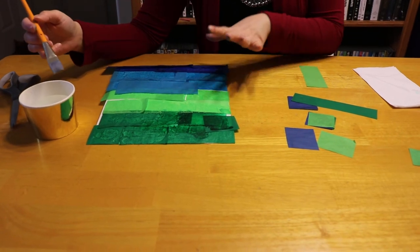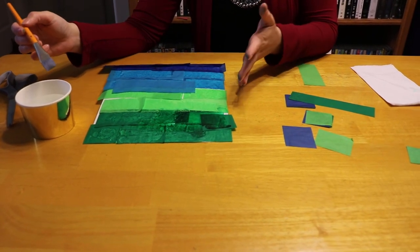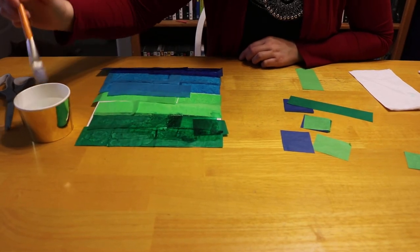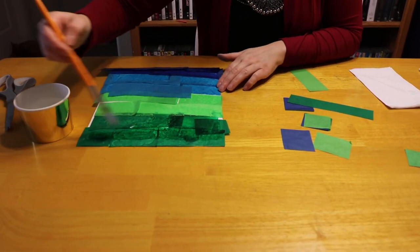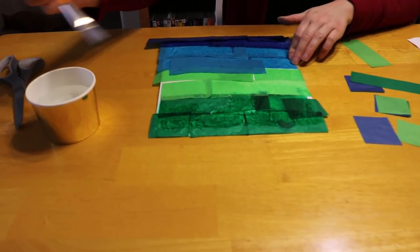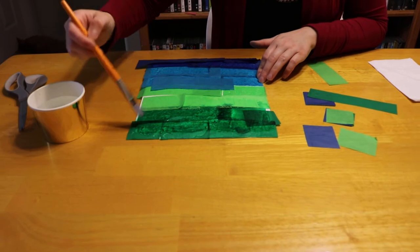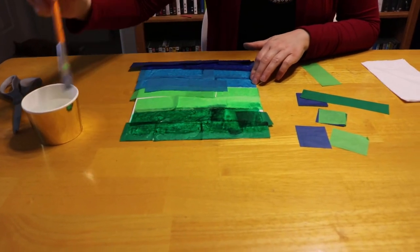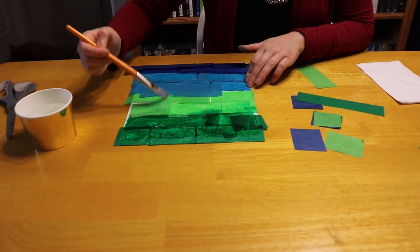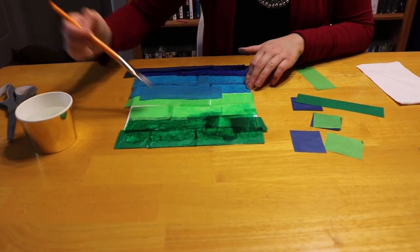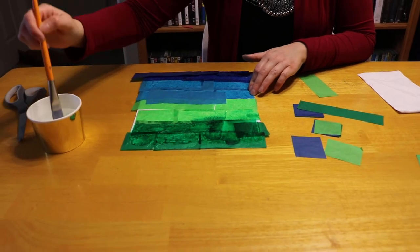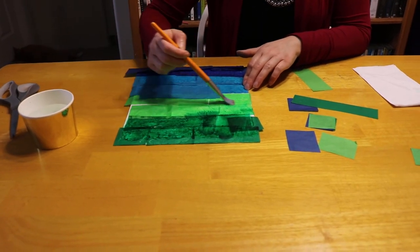And once you have all your paper down, you just want to get water all over again. So you can actually see all that color go. It's going to get on your brush. That's all right. You can actually see it faded a little bit there. So you don't want too much water because you don't want to wash out all your color. But you just want to get them wet enough that they're going to stick onto your paper and then really disperse all over your paper.